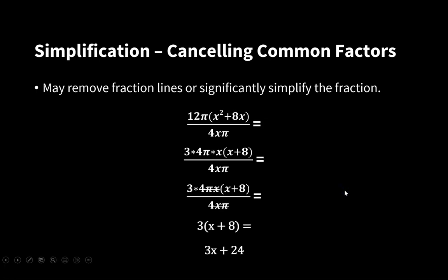We cancel the fraction line and are left with 3(x + 8) which is simply 3x + 24. You would agree with me that that's a much simpler version than what we see at the beginning. This summarizes cancelling common factors and simplification. We'll deal with manipulation shortly.